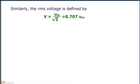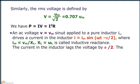Similarly, the RMS voltage is defined as shown. Also we have P equals IV, which is again equal to I squared R.